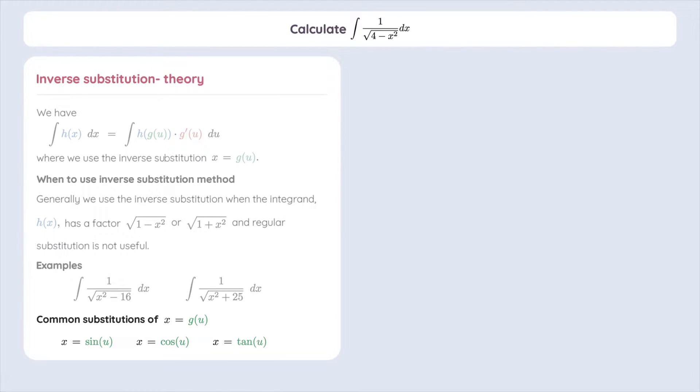Let's take a look at an example. We want to integrate the function in the title above, 1 divided by square root of 4 minus x squared. The first step is to choose the appropriate substitution function. Earlier we saw some examples, but which one to pick?